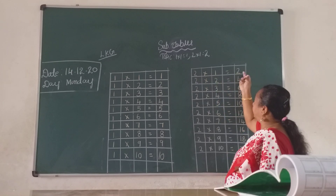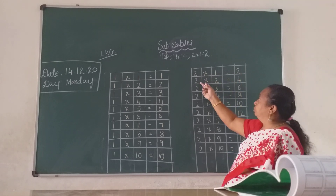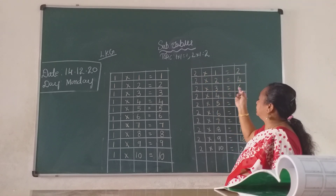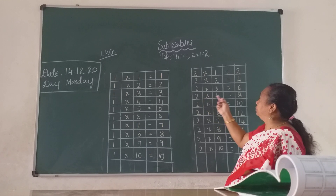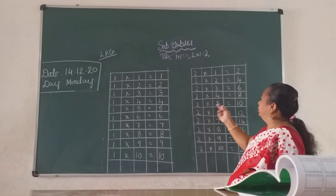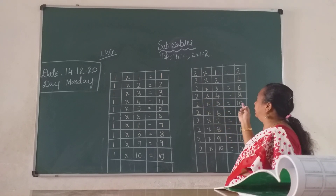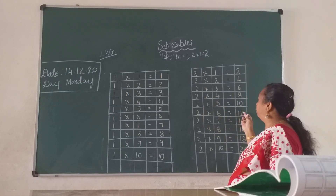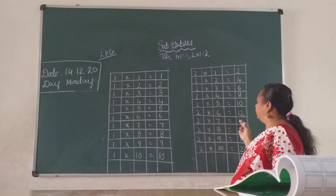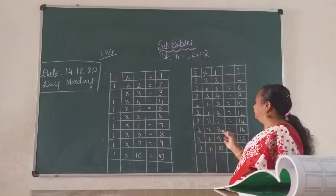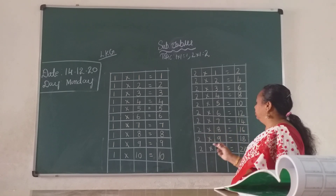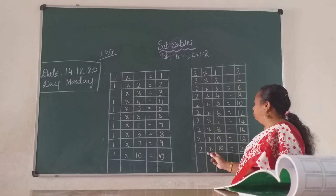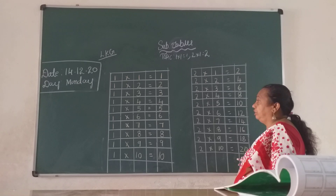Two ones are two. Two twos are four. Two threes are six. Two fours are eight. Two fives are ten. Two sixes are twelve. Two sevens are fourteen. Two eights are sixteen. Two nines are eighteen. Two tens are twenty.